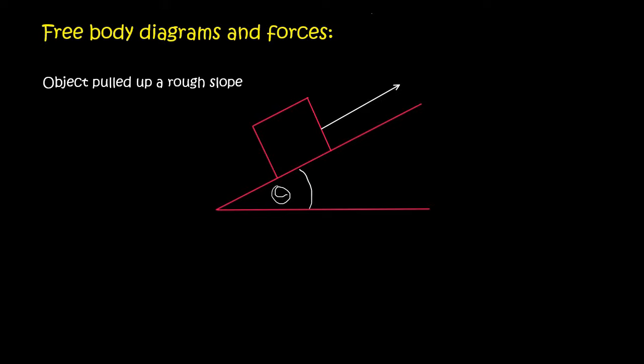So here we have an object that is being pulled up a slope. So the forces that are acting on this object, pause the video and see if you can figure this out for yourself. But obviously, there's always going to be gravity. Now, gravity acts down, and I'm going to draw this out neatly just now. Now, we've got an applied force, which we can see over there.